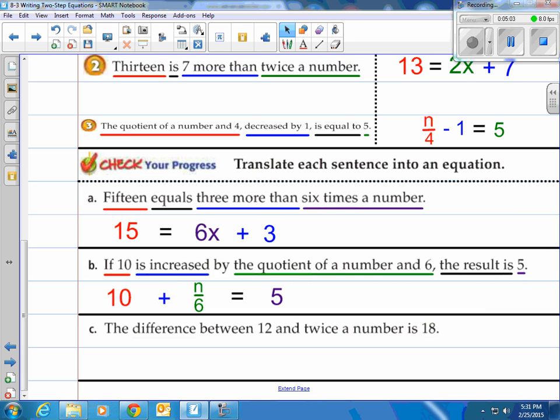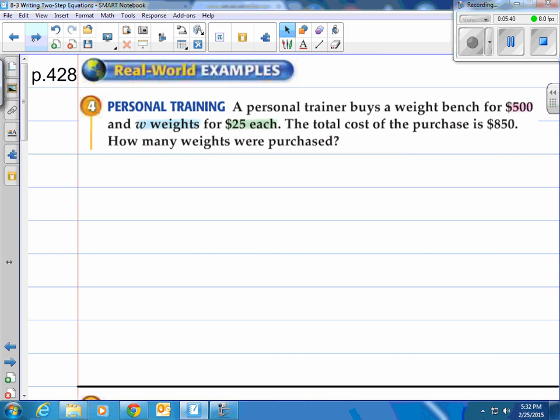How about c? The difference between 12 and twice a number is 18. The difference means subtraction. Between 12 and twice a number, you've got to put it in order respectively. Twelve comes first, then twice a number comes second. So we have 12 minus 2x equals 18. You cannot switch that one around. If you have 2x minus 12, that's a different math problem. It does not equal 18. Remember, subtraction is not commutative.